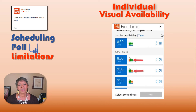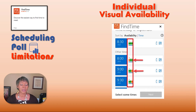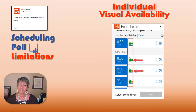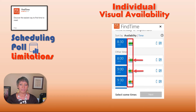Many users also expressed missing the visual availability with the people icons on the screen. This was a personal preference. Scheduling poll does show the availability, but without the people icons.